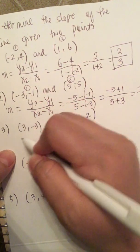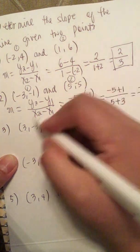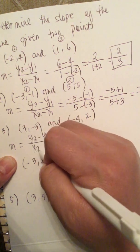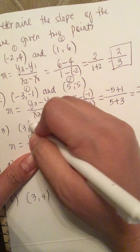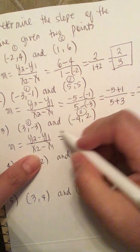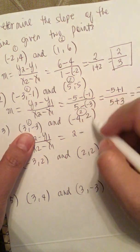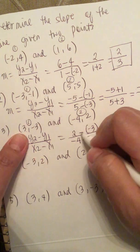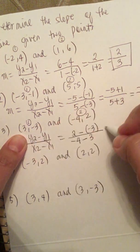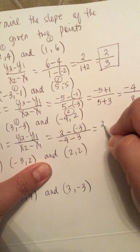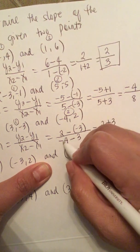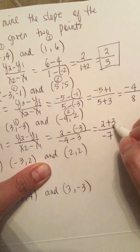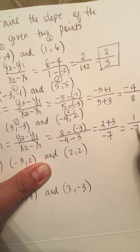Next we have (3, -3) and (4, 2). So m equals y2 minus y1 over x2 minus x1. Labeling them as point 1 and point 2, we get 2 minus (-3) over 4 minus 3. That equals 2 plus 3 over 1, which simplifies to 5 over... wait — 4 minus 3 is not -7. We have 2 minus (-3) over -4 minus 3, so 2 plus 3 is 5 over -7, giving a slope of -1/7.